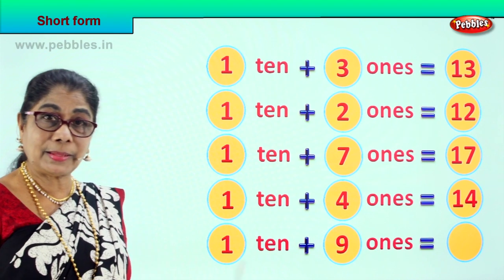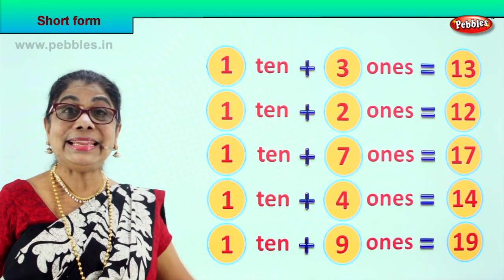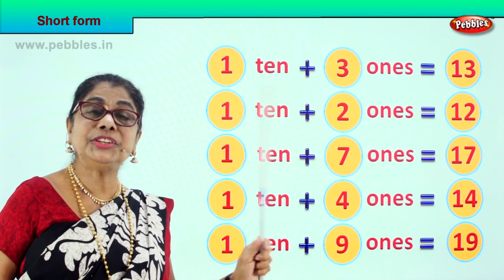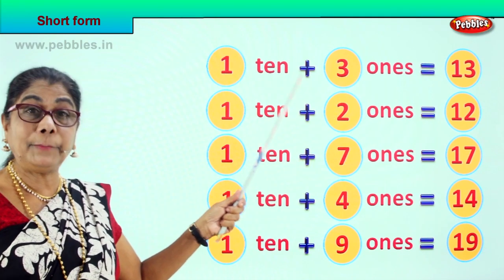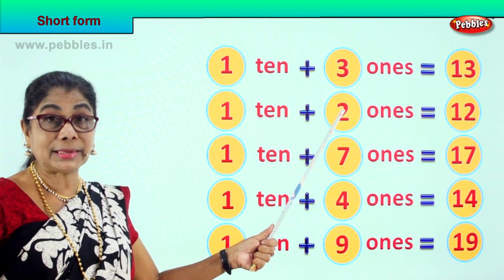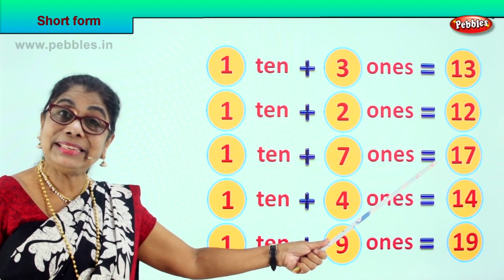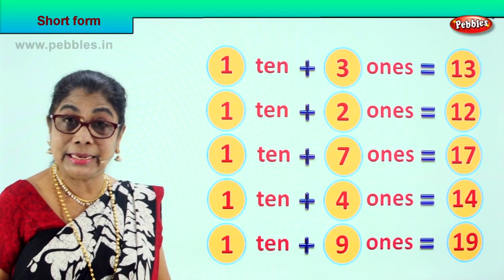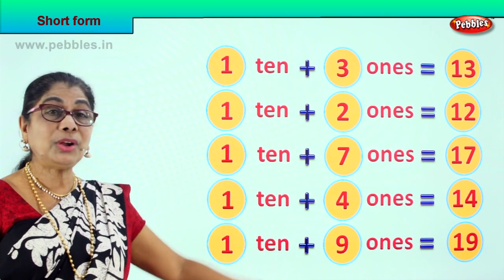One ten plus nine ones — ten plus nine — equal to nineteen. Now let's look at it all. What are we learning? We are learning short form — how to make this short. One ten plus three ones is equal to 13. One ten plus two ones is equal to 12. One ten plus seven ones is equal to 17. One ten plus four ones is equal to 14. One ten plus nine ones is equal to 19. So we learnt the short form today.